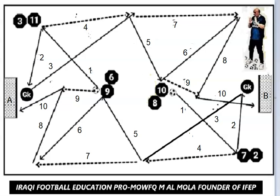Number eleven receives the ball, plays the first wall pass with the goalkeeper and the second wall pass with number ten, then lays off the ball outside the penalty area for number ten to finish. The same sequence is happening on the other side: number seven, after receiving the ball from number ten, plays the first wall pass with the goalkeeper.